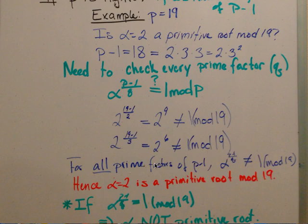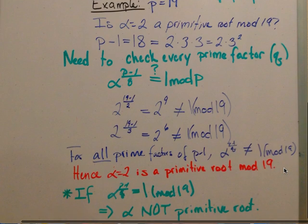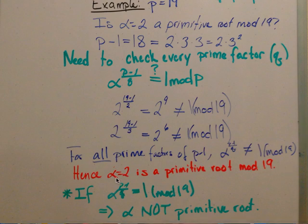Since for all prime factors of p minus 1 (being 2 and 3 in this case), alpha to the (p minus 1) over q was not congruent to 1 mod 19, we conclude that alpha equals 2 is a primitive root mod 19.